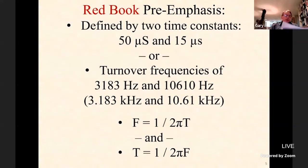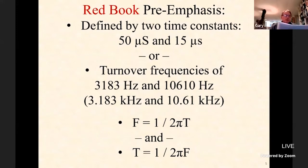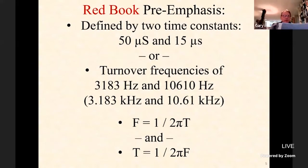The Redbook pre-emphasis curve is defined by two time constants: 50 microseconds and 15 microseconds. These correspond to turnover frequencies of 3,183 hertz and 10,610 hertz. The high-frequency boost begins at 3,183 Hz and shelves — flattens out — at 10,610 Hz. Many of you will be familiar with the simple formulas for converting frequency to time constant and vice versa.